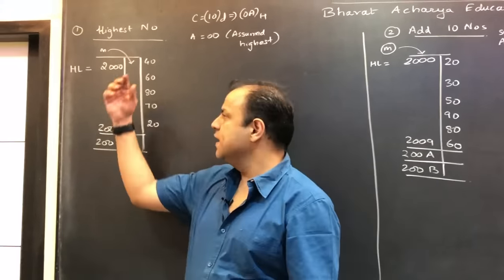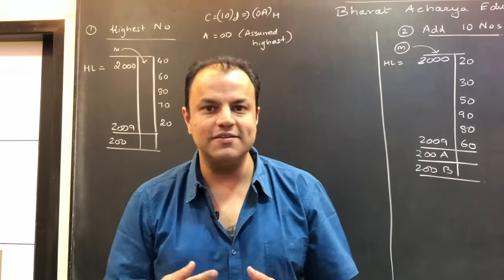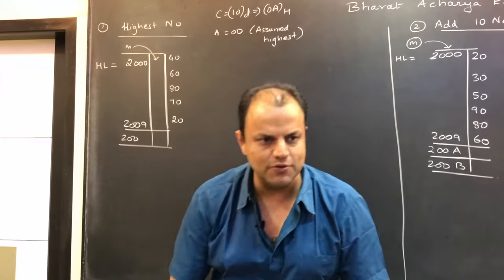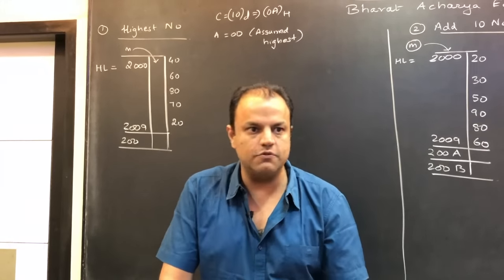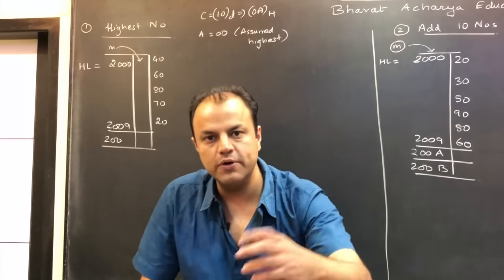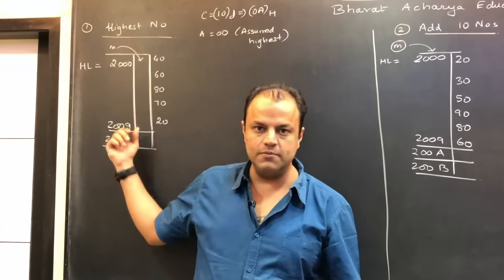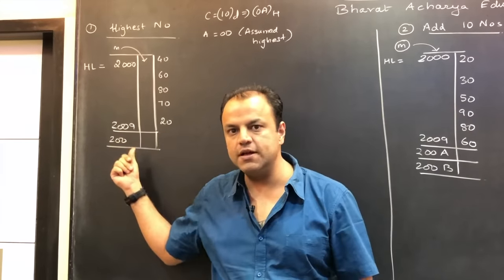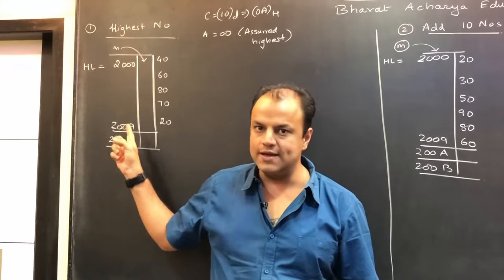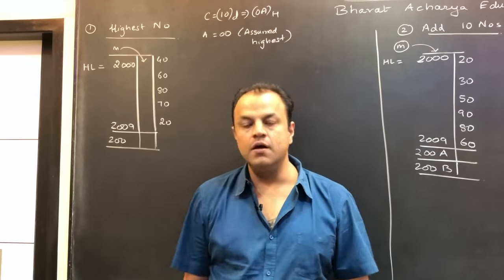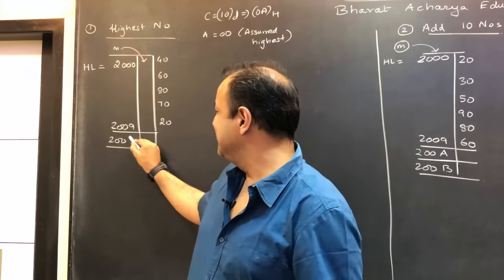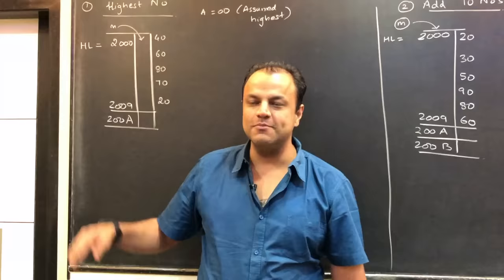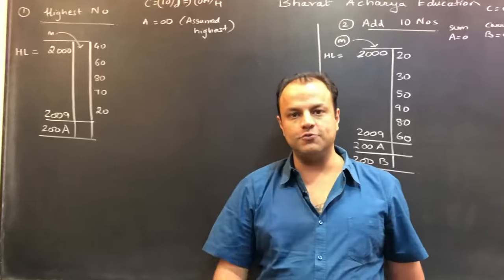When you hit max it doesn't come by magic — there's a program written behind it, and that program is what we are writing for 8085. How big is the series? You assume that yourself. Where is the series stored? You assume that too. These details are often not given in exam questions because it's immaterial — whether the series has 20 or 50 elements, the procedure is the same. So let's say there's a series of 10 numbers stored from location 2000. We'll find the highest and store the result at location 200A.